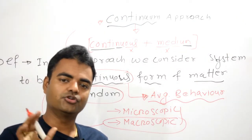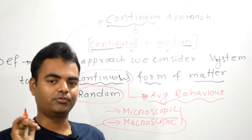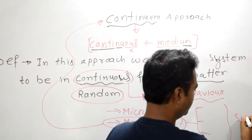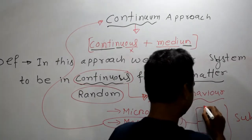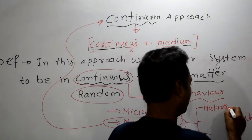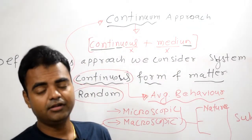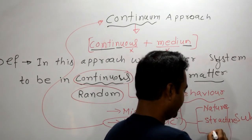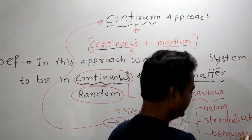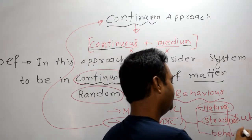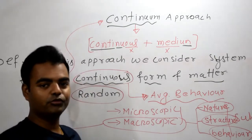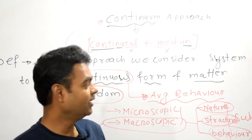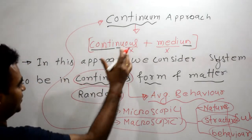In thermodynamics we study macroscopic approach only, not microscopic approach. In macroscopic approach there are three important factors we need to know about a substance: one is the nature of substance, then the structure of substance, and the behavior of substance. These three things are very important for understanding the macroscopic approach of any substance.